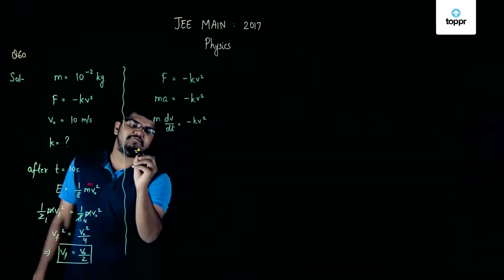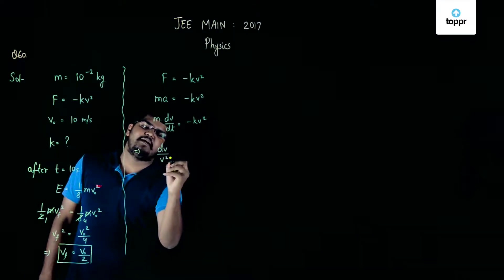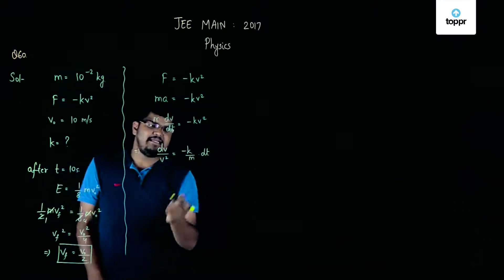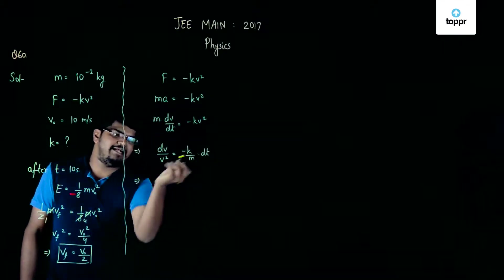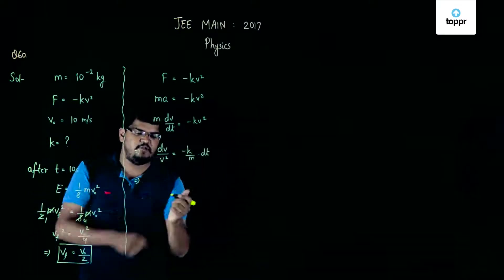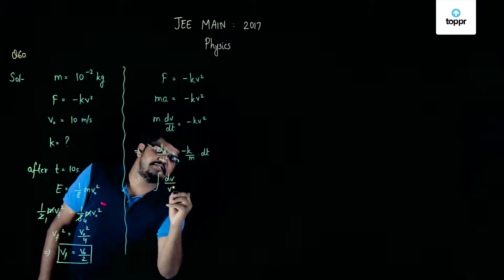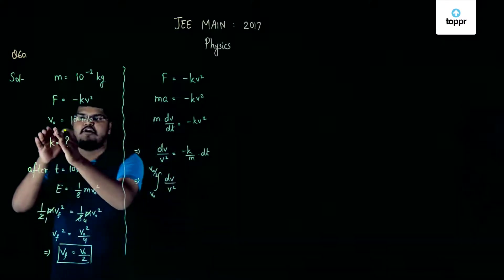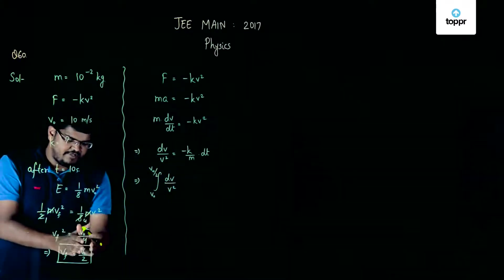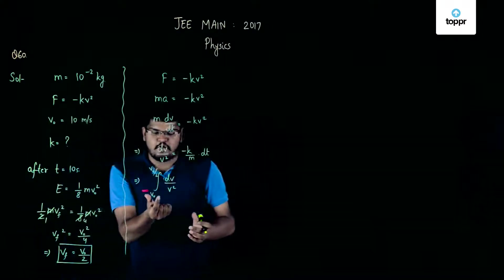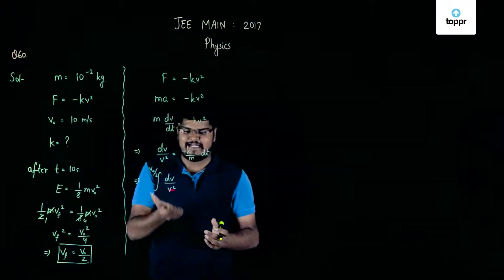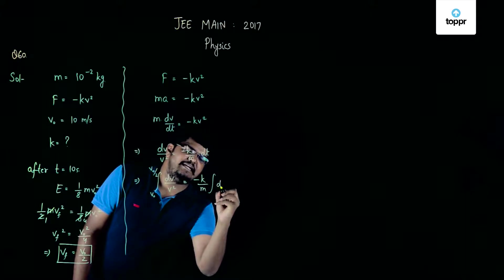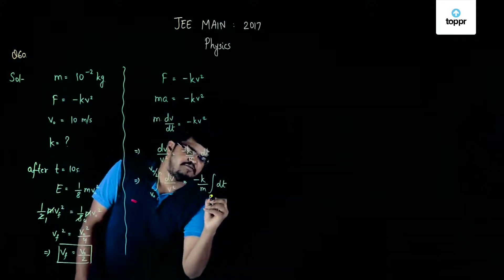If we rearrange these terms we will get dv/v² = -(k/m)dt. Now, integrating both sides, the integration of dv/v² will go from v₀ to v₀/2, because initially the velocity was 10 m/s and finally it was v₀/2 = 5 m/s. This equals -(k/m) times the integral of dt, where the time interval is from 0 to 10.